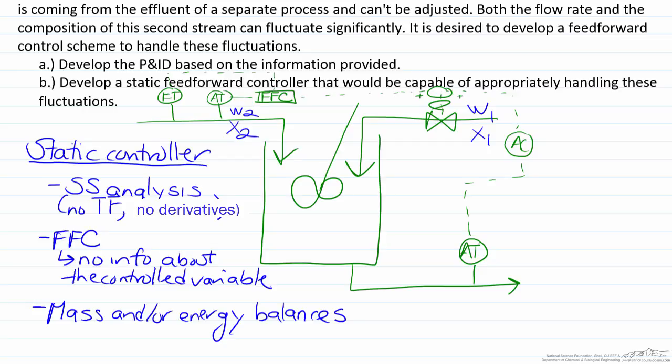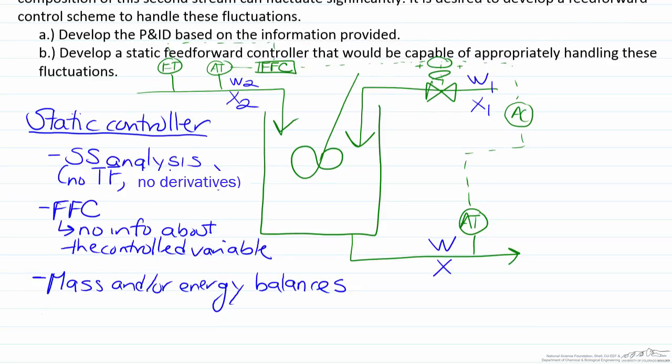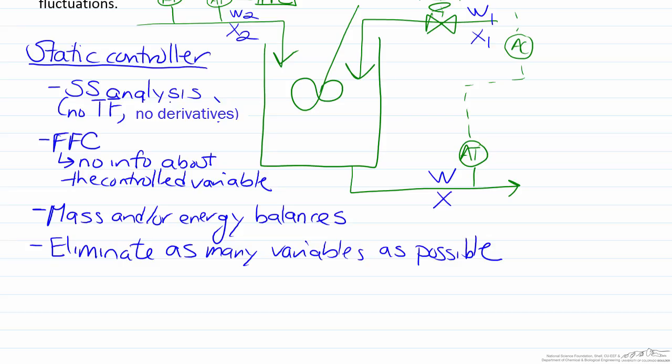We'll have W and X represent what is exiting the blending tank. Our goal when developing a static controller here is to eliminate as many variables as possible. For our system we'll have two balances of note, two mass balances: one will be a total mass balance and one will be a component balance.